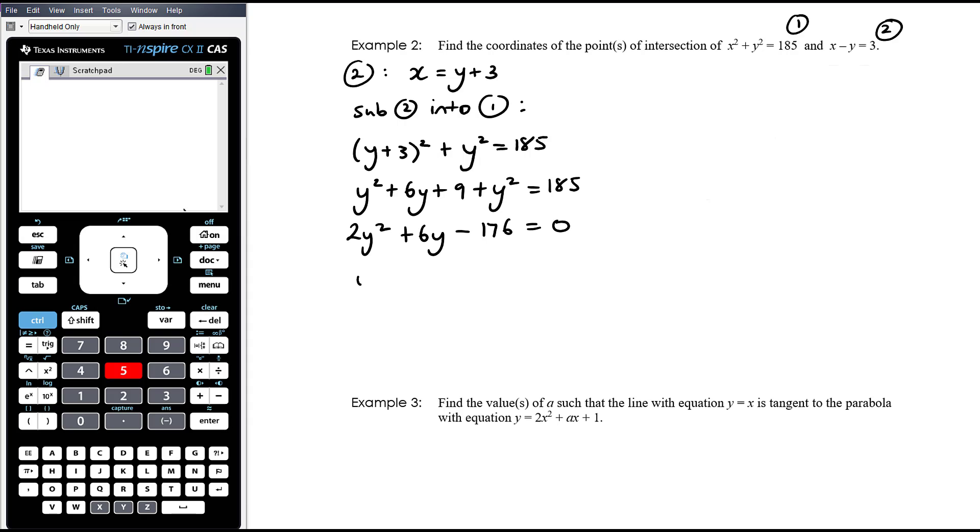2 is a nice common factor there. y squared plus 3y minus, what's that going to be? 160 is 80 plus 88. Then we're looking for factors of negative 88 that add up to 3. And that's actually going to be 8 and 11. So y plus 11, y minus 8. So we've got y equals negative 11, or y equals 8.